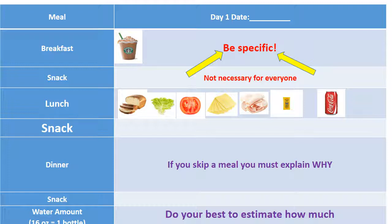You'll need to be very specific. Notice that I have arrows pointing towards the specific. For example, if at lunch you have a turkey sandwich with lettuce, cheese, tomato, mayonnaise, and mustard, you need to make sure that you are listing all of those ingredients in that lunch column. By doing this, it's going to really help you in parts 2 and 3 of the food diary analysis project. If you do not write down the foods specifically in this part, you're going to find it much more challenging in parts 2 and 3. So please be specific.